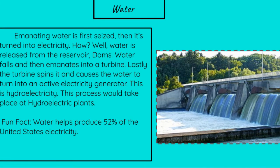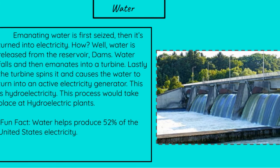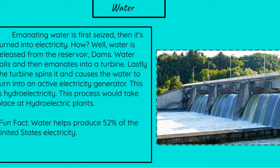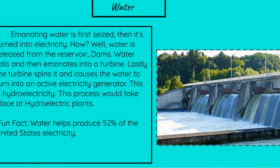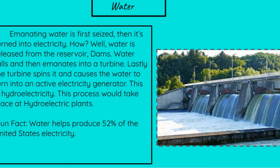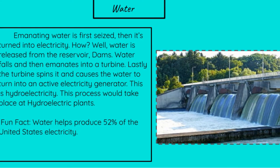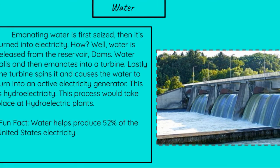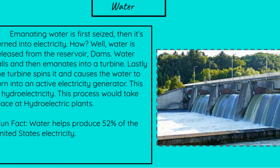Let's talk about the first source, which is water. Water is first seized, then it's turned into electricity. Water is first released from the reservoir — for example, dams. Water falls and then flows into a turbine. The turbine spins and causes the water to turn into an active electricity generator. This is called hydroelectricity, and this process takes place at hydroelectric plants. Fun fact: water helps produce 52% of the United States' electricity.